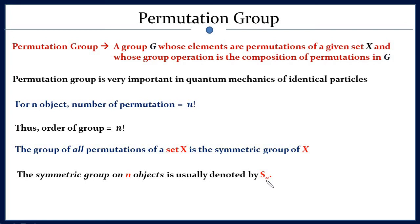Any permutation group of n objects can be represented by Sn, where S stands for symmetry and n is for the number of objects. If you are dealing with the permutation group of 3 objects, we denote it by S3. Let's see an example so that all these concepts and definitions become clear.